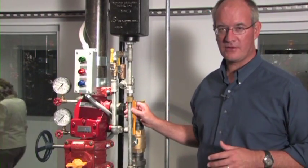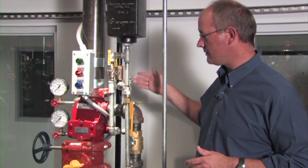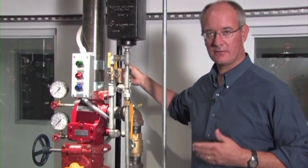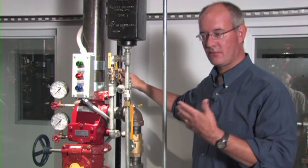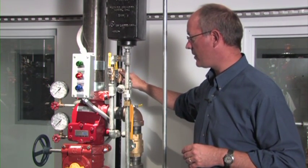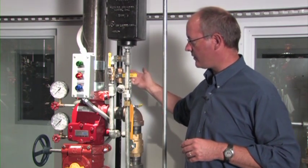Once the riser is drained, we're going to correct our problem in the field, which may be replacing a sprinkler head or fixing piping that could have been broke. In this case, this is the way we would correct our condition.